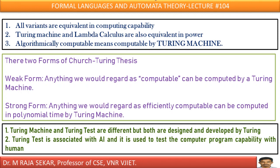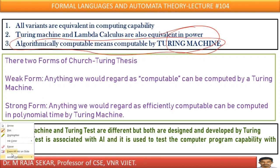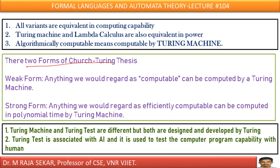All variants of Turing machines are equivalent in computing capability. Turing machines and lambda calculus are also equivalent. This third point is very important — this is the Church-Turing thesis. Algorithmically computable means computable by a Turing machine. If you are able to compute something with an algorithm, it can certainly be computed by a Turing machine. There are two forms of the Church-Turing thesis.